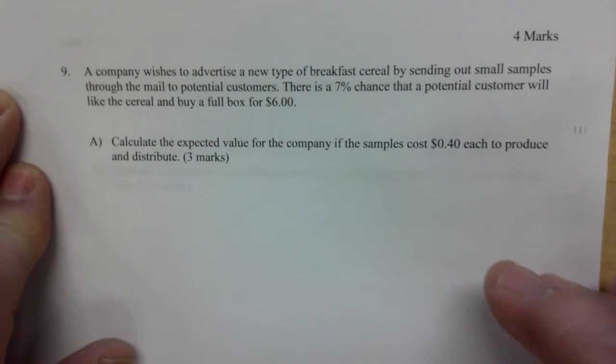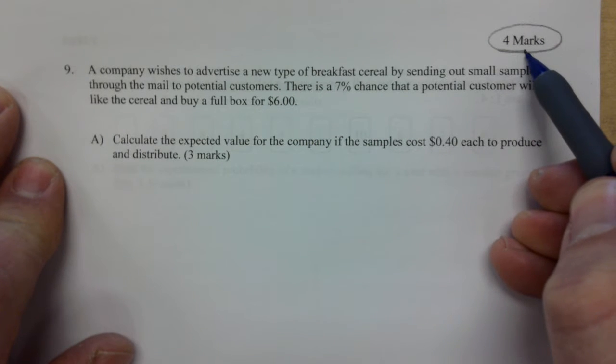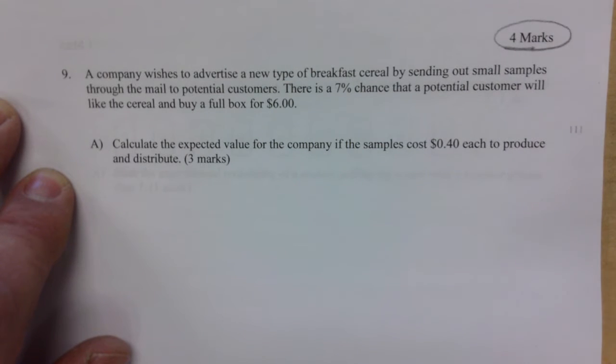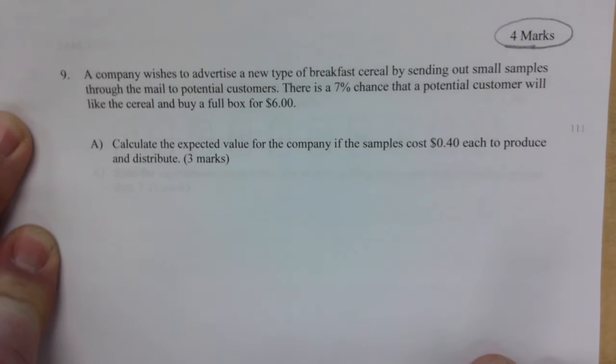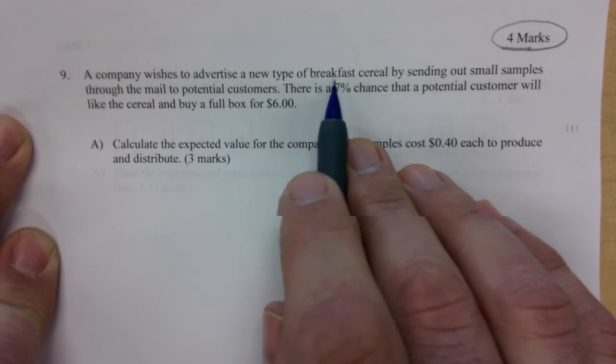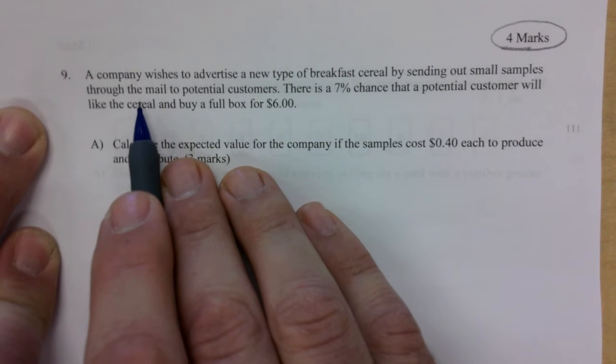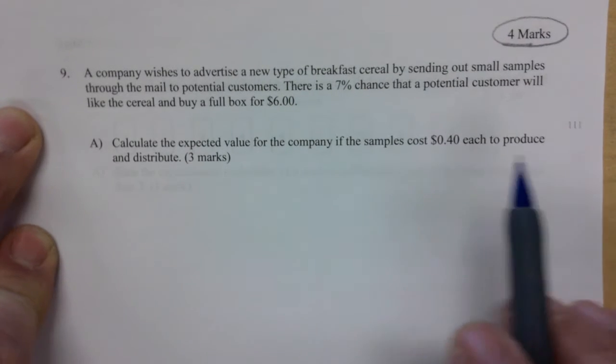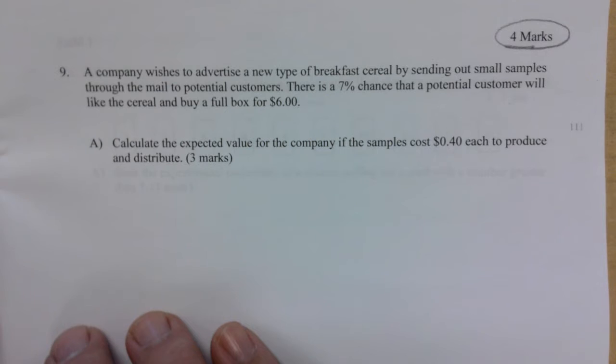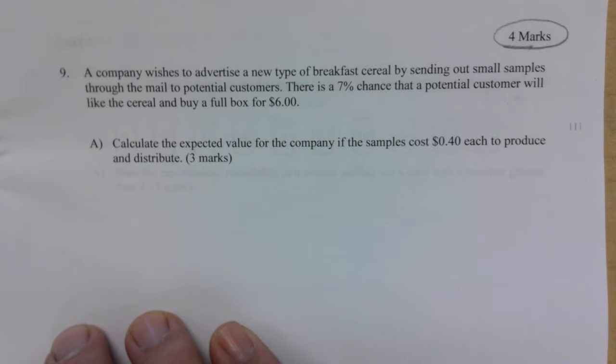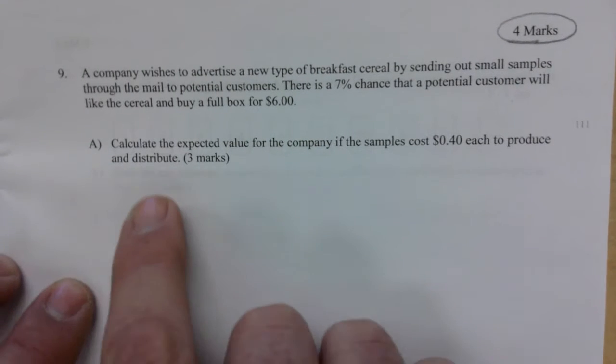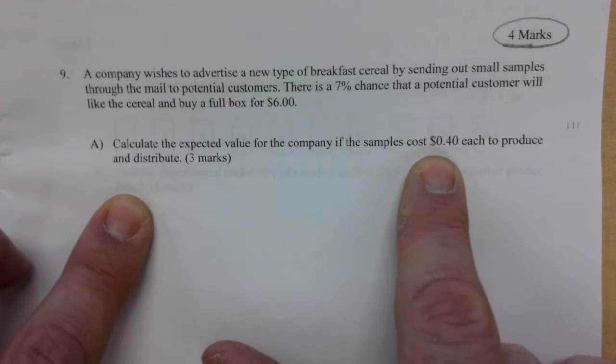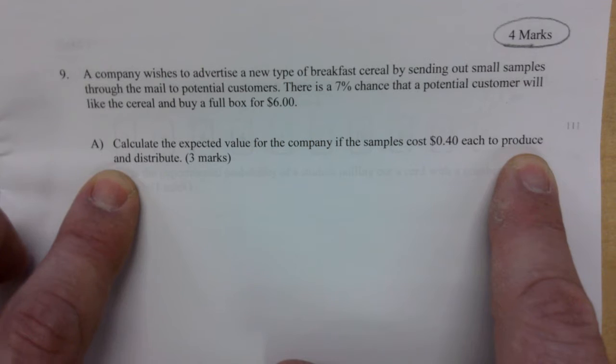Page 10. Now you're looking at the heavy hitter. There was a warm up period, now it comes down to understanding. Four marks for this whole page. A company wishes to advertise a new type of breakfast cereal by sending out small samples through the mail to potential customers. There's a 7% chance that a potential customer will like the cereal and buy a full box for $6.